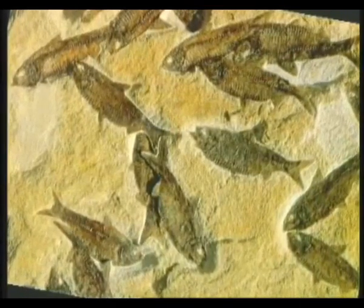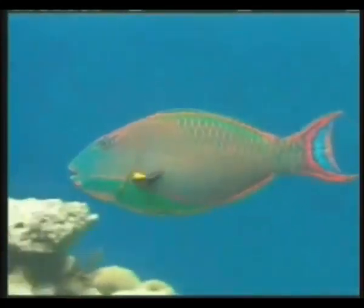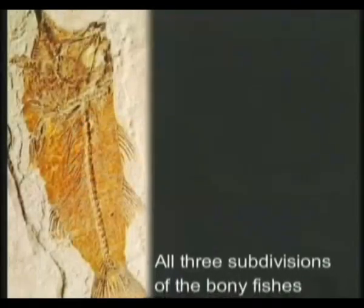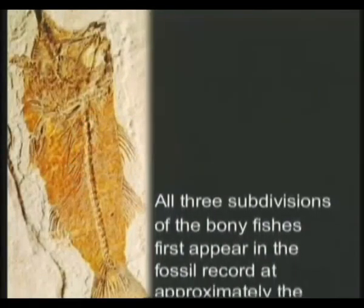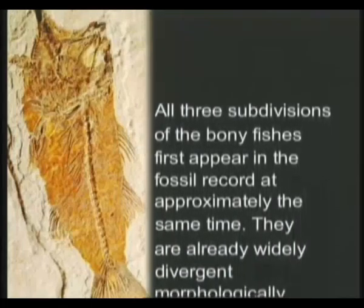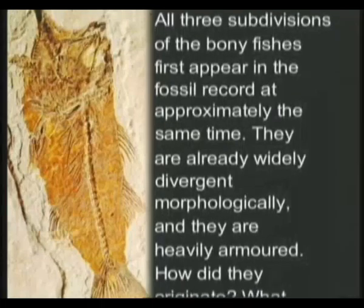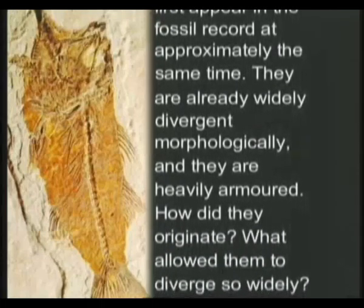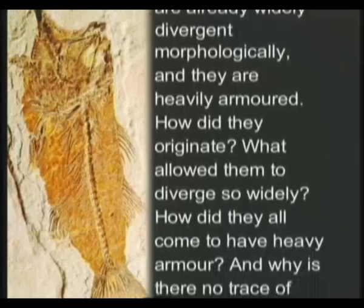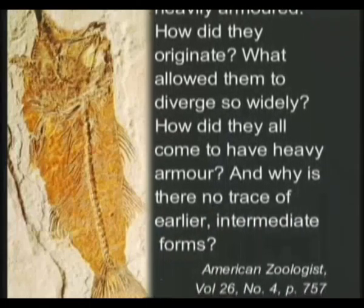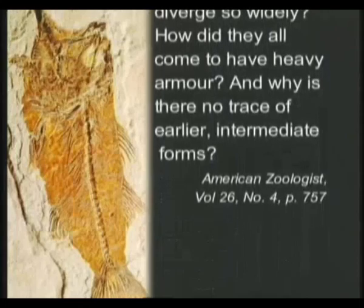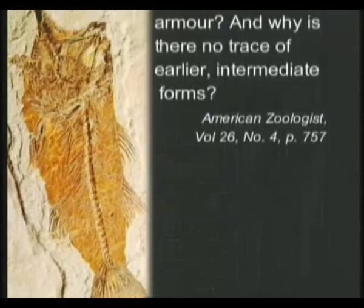Gerald Todd, an evolutionary paleontologist, sets out these unanswerable questions in his article titled 'Evolution of the Lung and the Origin of Bony Fishes': All three subdivisions of the bony fishes first appear in the fossil record at approximately the same time. They are already widely divergent morphologically and they are heavily armored. How did they originate? What allowed them to diverge so widely? How did they all come to have heavy armor? And why is there no trace of earlier intermediate forms?